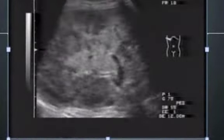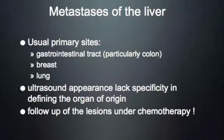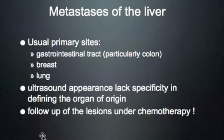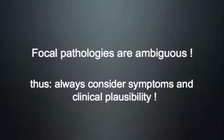Another example: multiple lesions of different sizes, some confluent, some single; a gallstone is also visible but is certainly not the patient's main problem. The usual primary sites to consider are gastrointestinal tract — particularly colorectal cancer — breast cancer, and lung cancer. Ultrasound appearance lacks specificity for determining the organ of origin. Lesions can be followed during chemotherapy to assess treatment response.